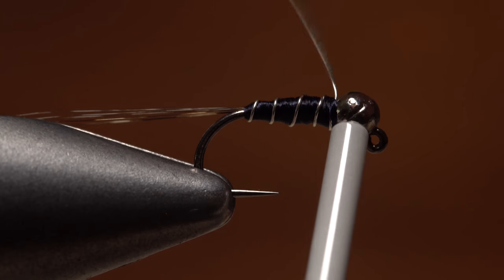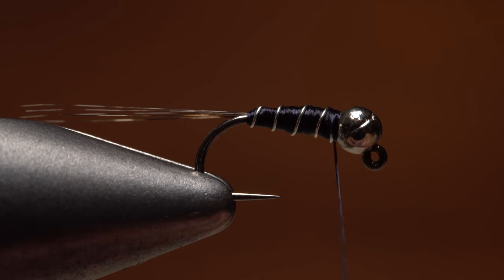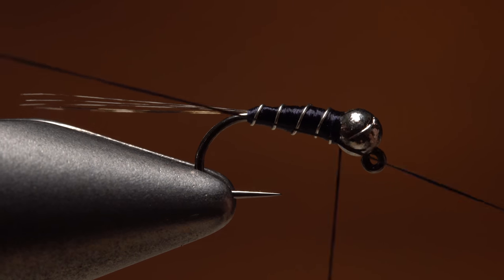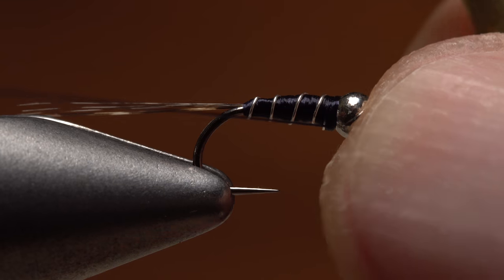Then, brace the hook with the nozzle of your bobbin and helicopter to break the wire off close and clean. Do a four or five turn whip finish and snip or cut your tying thread free.